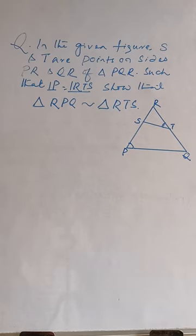In the given figure, S and T are points on sides PR and QR of triangle PQR such that angle P is equal to angle RTS, so that triangle RPQ is similar to triangle RTS.